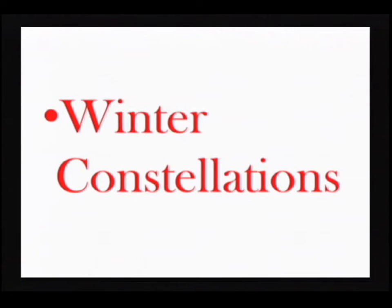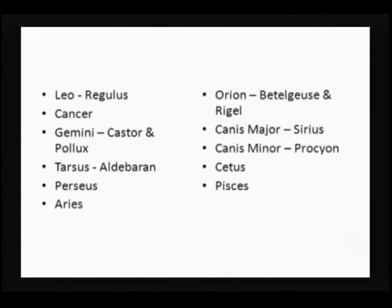So now let's talk about winter constellations. We have the North Circumpolar Constellations — you see those things all year round, just rotating around Polaris. In terms of winter constellations, there are several I'd like you to be aware of: Leo with the bright star Regulus, Cancer, Gemini with the two bright stars Castor and Pollux, Taurus with the bright star Aldebaran, Perseus, Aries, and Orion, which has two bright stars — Betelgeuse and Rigel.